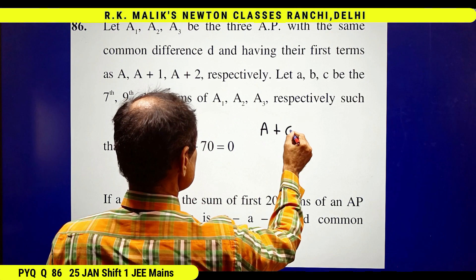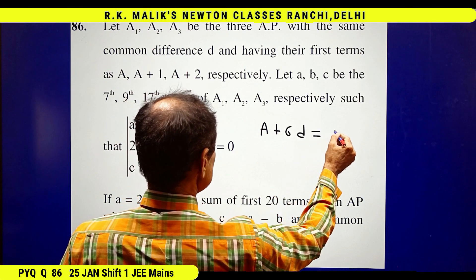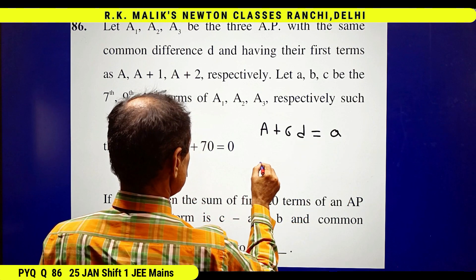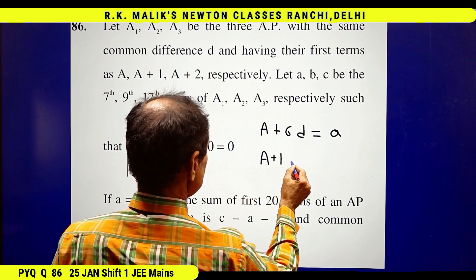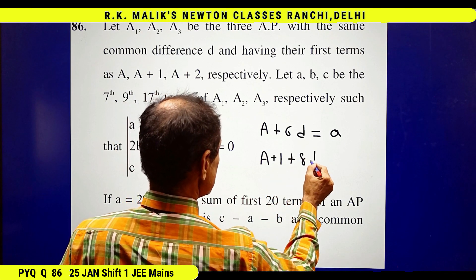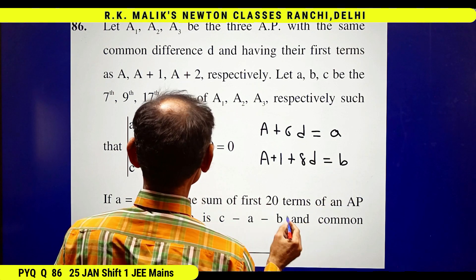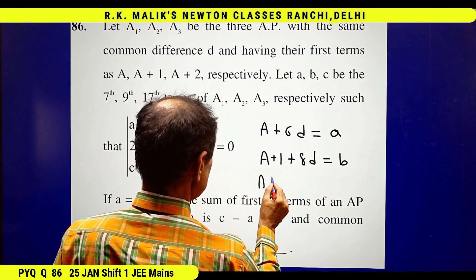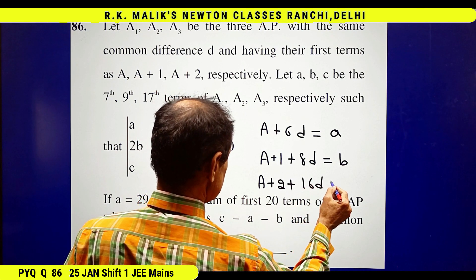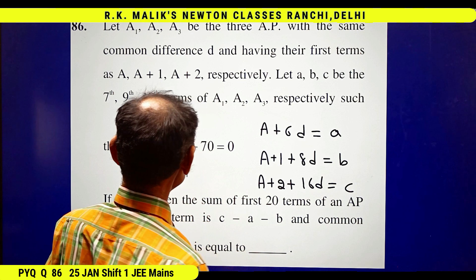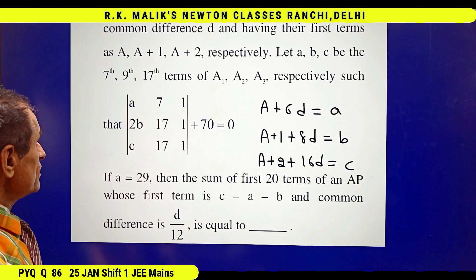Therefore, A plus 6D is equal to a. A plus 1 plus 8D equals b, and A plus 2 plus 16D is equal to c.